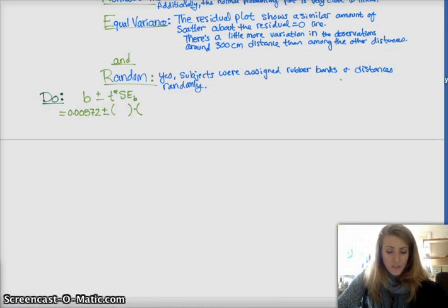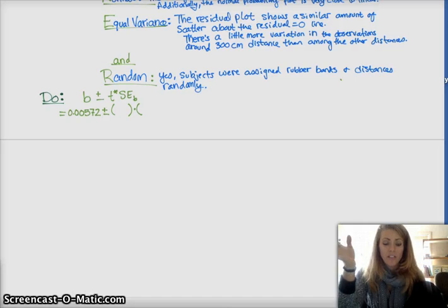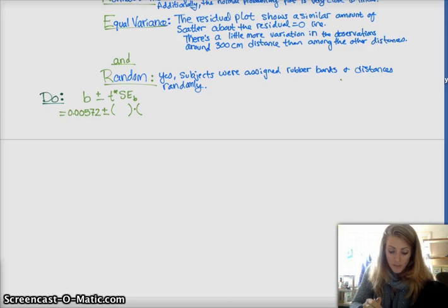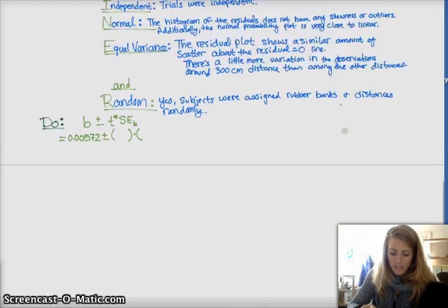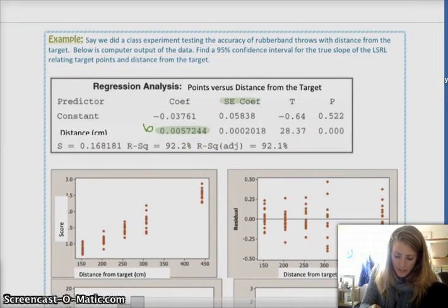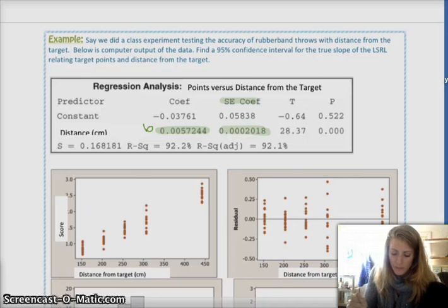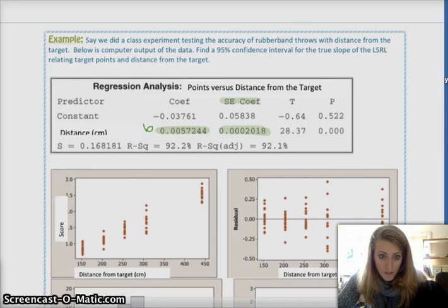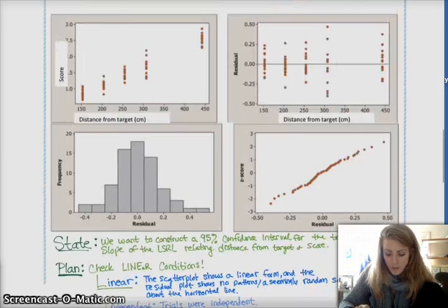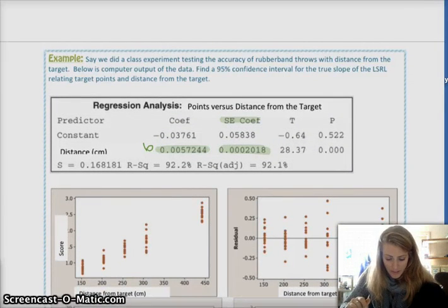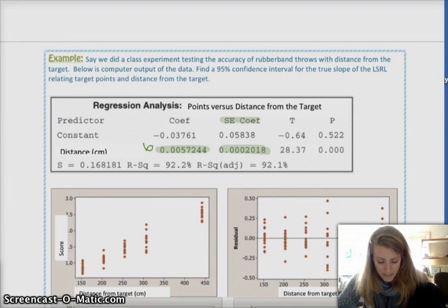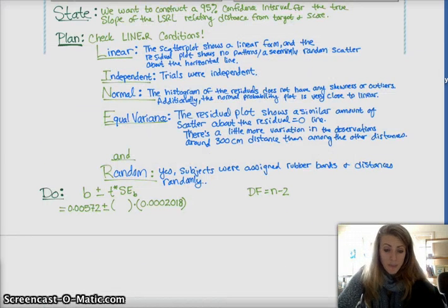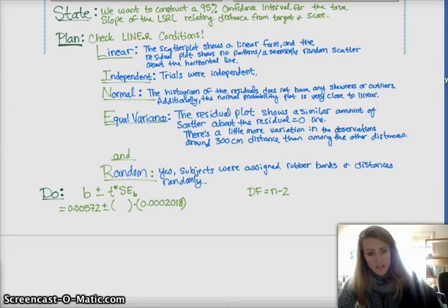T-star critical value you just get from the 95% confidence interval piece of the stats packet for the T distribution, but degrees of freedom, n minus 2. But first, let's do our standard error. Standard error comes from standard error coefficient for the slope, so your standard error is 0.0002. Degrees of freedom is n minus 2. We don't know what n is until we go to our little thingy over here. Did they give us that? Whoops, I forgot to. Sorry! So, in the actual experiment, there were 70 observations, so our degrees of freedom is 68. Sorry, I didn't write that.